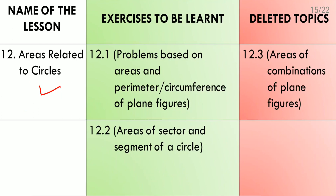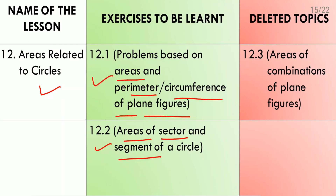Lesson 12: Areas Related to Circles. Exercise 12.1 has problems based on areas and perimeter or circumference of plane figures. Exercise 12.2 covers areas of sectors and segments of a circle. Only these two exercises we need to do. Exercise 12.3, about areas of combinations of plane figures, is deleted — it is quite a big exercise and they have deleted it.